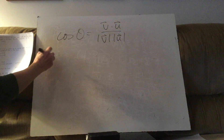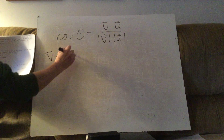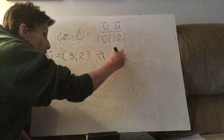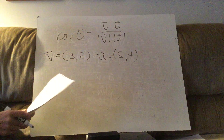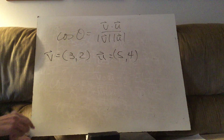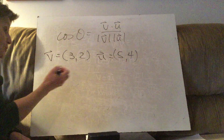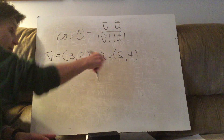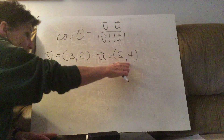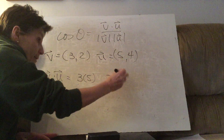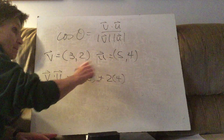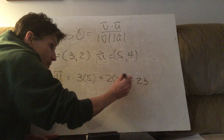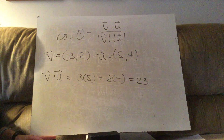Problem B: my vectors are (3, 2) and (5, 4). Using the formula, we need the dot product. The dot product is x times x plus y times y, so 15 plus 8. What is that? 23. So the dot product is 23.